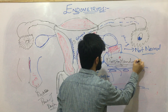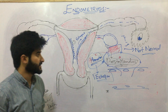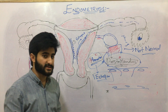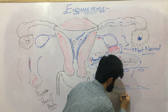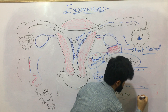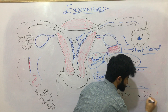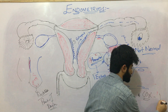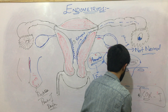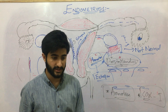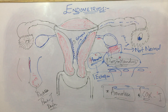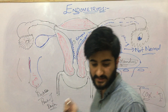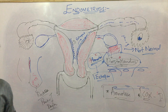Since prostaglandins and aromatase are both involved in the pathogenesis of endometriosis, we can give aromatase inhibitors and COX inhibitors — specifically COX-2 inhibitors such as celecoxib — to reduce endometriosis. Both aromatase inhibitors and COX-2 inhibitors play a role in the treatment of endometriosis.